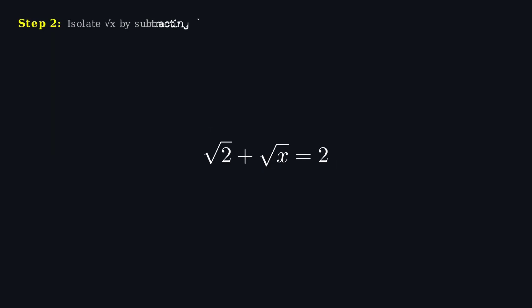What we want is to figure out the value of x. The first thing we should do is get the √x by itself. To make that happen, I'll subtract √2 from both sides of the equation. That gives us √x equals 2 minus √2.